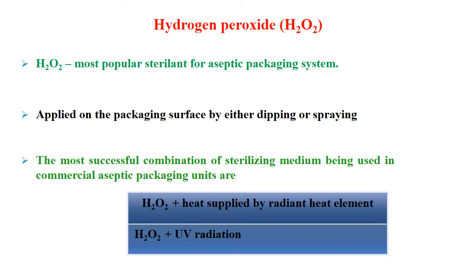The most commonly used chemical sterilization medium is hydrogen peroxide, which is the most popular sterilizing agent for aseptic packaging systems in UHT milk. It is applied on the packaging surface by either dipping the packaging material in hydrogen peroxide or by spraying it on the inner surface. The most successful combination used in commercial aseptic packaging units is hydrogen peroxide plus heat supplied by a radiant heat element, or hydrogen peroxide combined with UV radiation. These are the most common combinations used commercially for sterilizing packaging material.